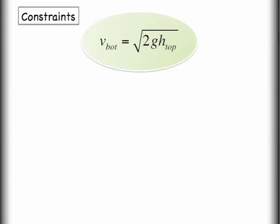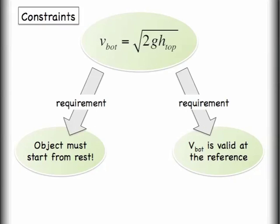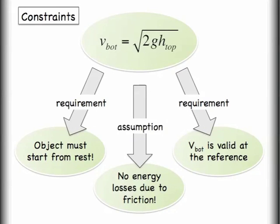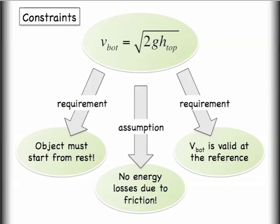When using this equation it's really important to recognize that there are certain constraints about it. The first requirement is that the object must start from rest. Remember that this equation assumes that the kinetic energy is zero at the top. The second requirement is that v_bot is only valid at the reference height. Although keep in mind that you can adjust the reference height as needed so that you can look at different parts in the path. There's also a big assumption in this guide that there are no energy losses due to friction. If you have a situation where you can't make these assumptions we do have a method that we can look at.